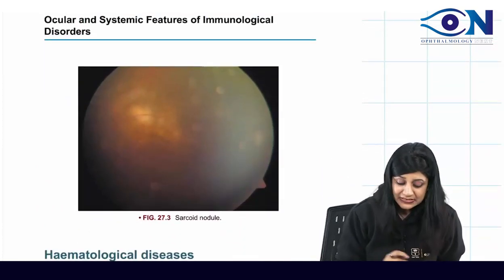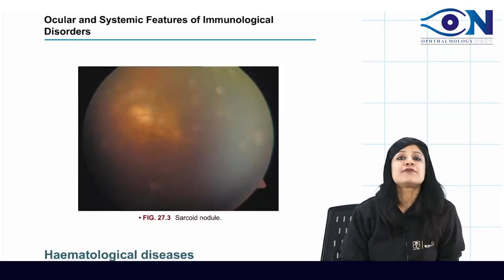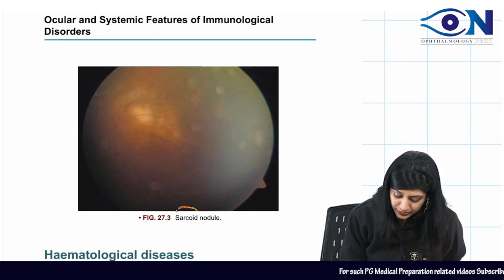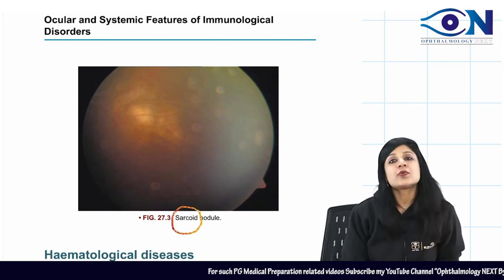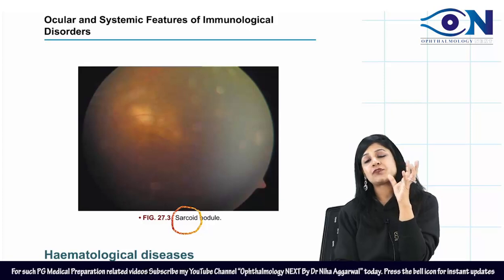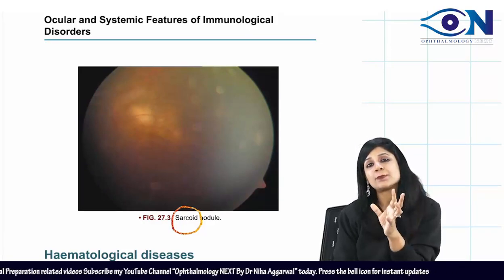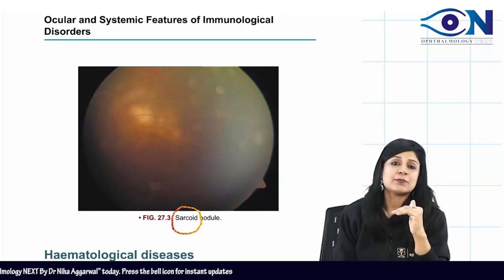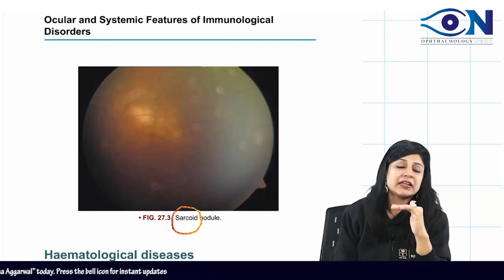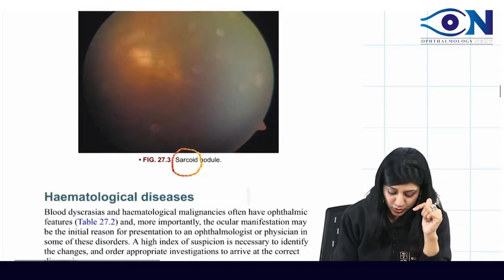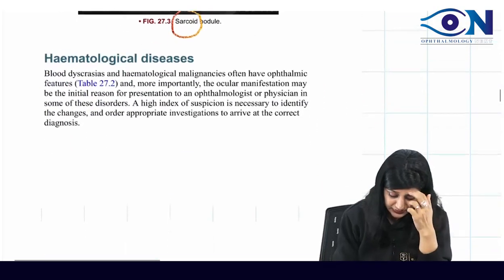Ocular and systemic features of immunological disorders include sarcoidosis. In sarcoidosis, you have candle wax dripping, snowball opacities which sink and settle at the bottom leading to snow banking. Remember this.